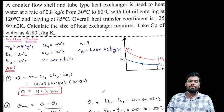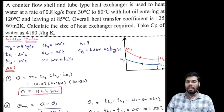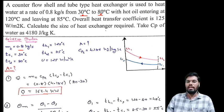Let's move to a second numerical. A counter flow shell-and-tube heat exchanger is used to heat water at a rate of MC = 0.8 kg/s from TC1 = 30°C to TC2 = 80°C — so water is our cold fluid. Hot oil enters at TH1 = 120°C and leaves at TH2 = 85°C. The overall heat transfer coefficient U = 125 W/m²·K. We need to find the surface area A.